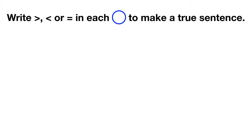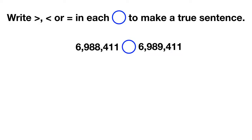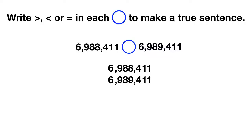Here's your last problem for today. Write a greater than, less than, or equal symbol in the circle to make this a true sentence. We start by writing out our first number, and then right below it we line up our ones place and write out our second number. Now we start comparing with the biggest place value: 6 and 6 are the same, 9 and 9 are the same, 8 and 8 are the same, but 8 and 9 are not. This is the place value to look at — the 9 is bigger, and it's in the second number, so our second number must be larger.